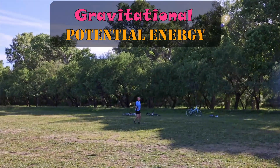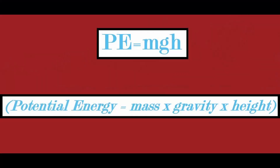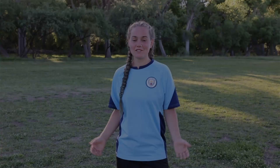This is gravitational potential energy, which is the energy of an object being moved to Earth by gravity, and is measurable with this equation.